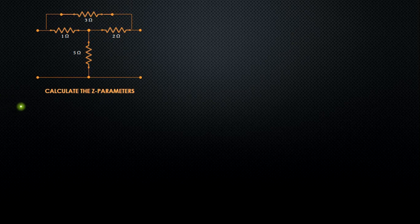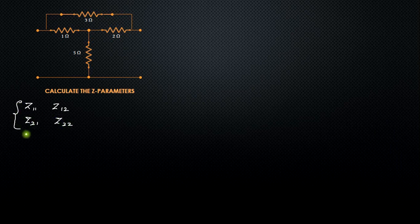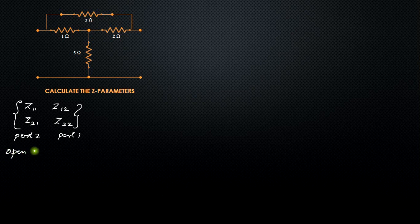We will use the physical conditions to calculate the Z-parameters. The Z-parameters are Z11, Z12, Z21, and Z22. Z11 and Z12 are calculated by open-circuiting port 2, and Z12 and Z22 are calculated by open-circuiting port 1. We will apply the first condition — open-circuiting port 2 — to calculate Z11 and Z12.